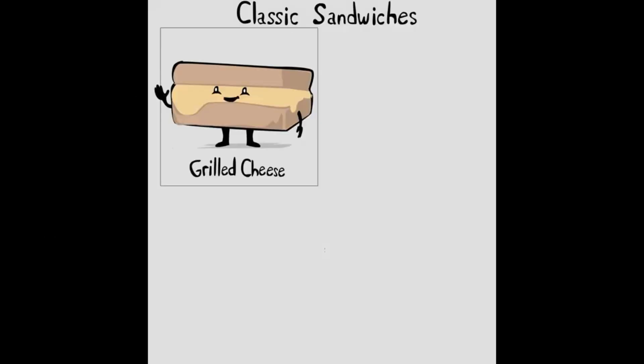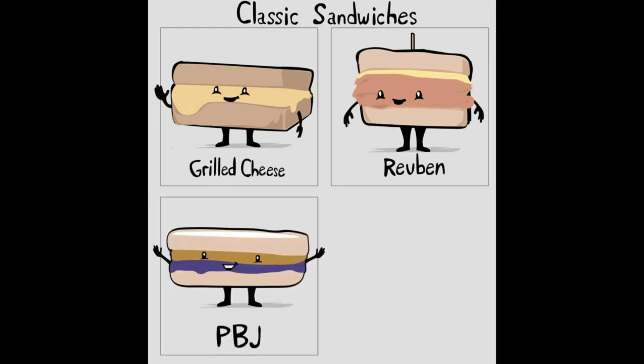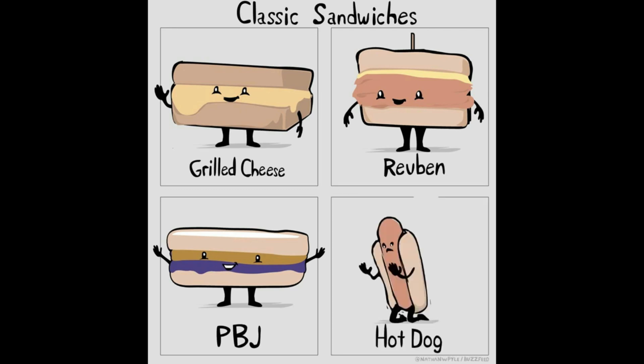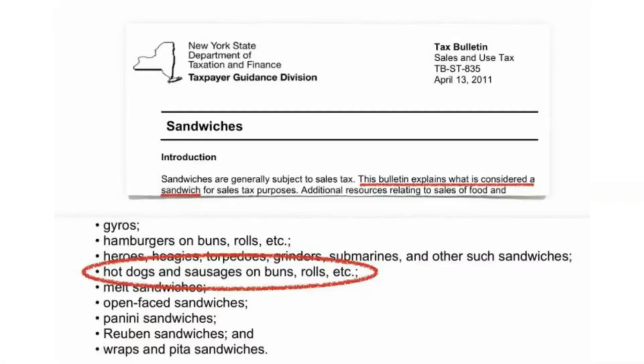We've got the grilled cheese, Reuben, and PB&J — they all look really happy, saying 'yes, we're classic sandwiches, you know we're sandwiches.' Hot dog is like, 'am I a sandwich? I don't know.'